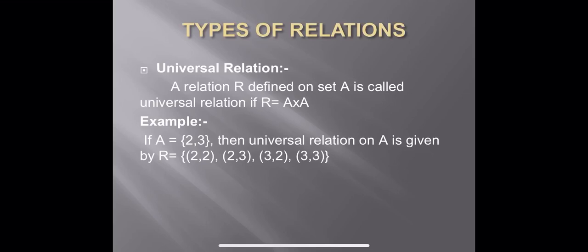on A is given by R equal to all possible ordered pairs from set A. These are (2,2), (2,3), (3,2), and (3,3). This is the largest universal relation.